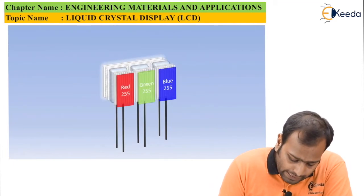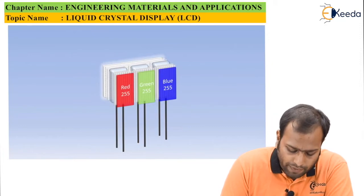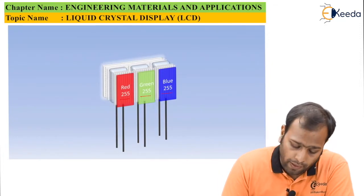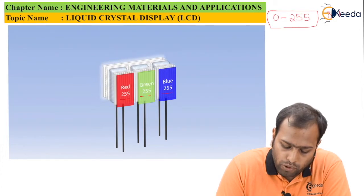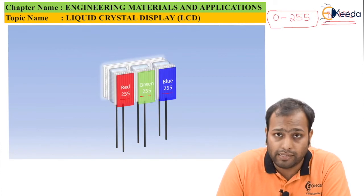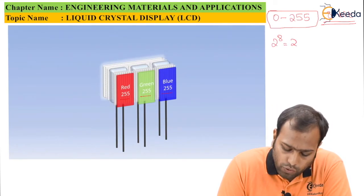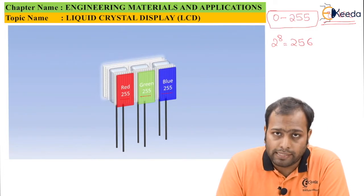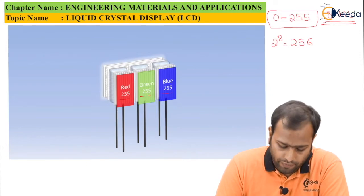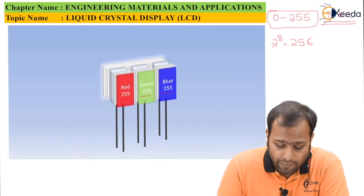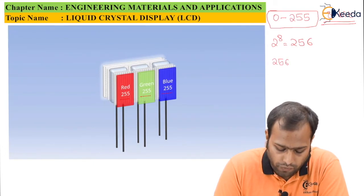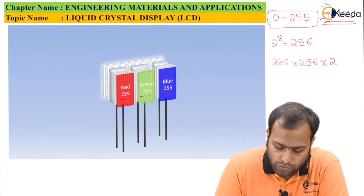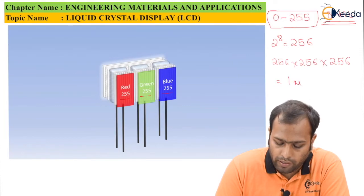The maximum value of red, green and blue can be given as 255. You might have observed the range of colors varies from 0 to 255 — this is for an 8-bit processor. 2 raised to 8 is 256, so with 8 bits you can produce a variation of 256 shades of red, 256 of green, and 256 of blue. Taking the permutation and combination, total colors would be 256 × 256 × 256, which is around 1 million colors.